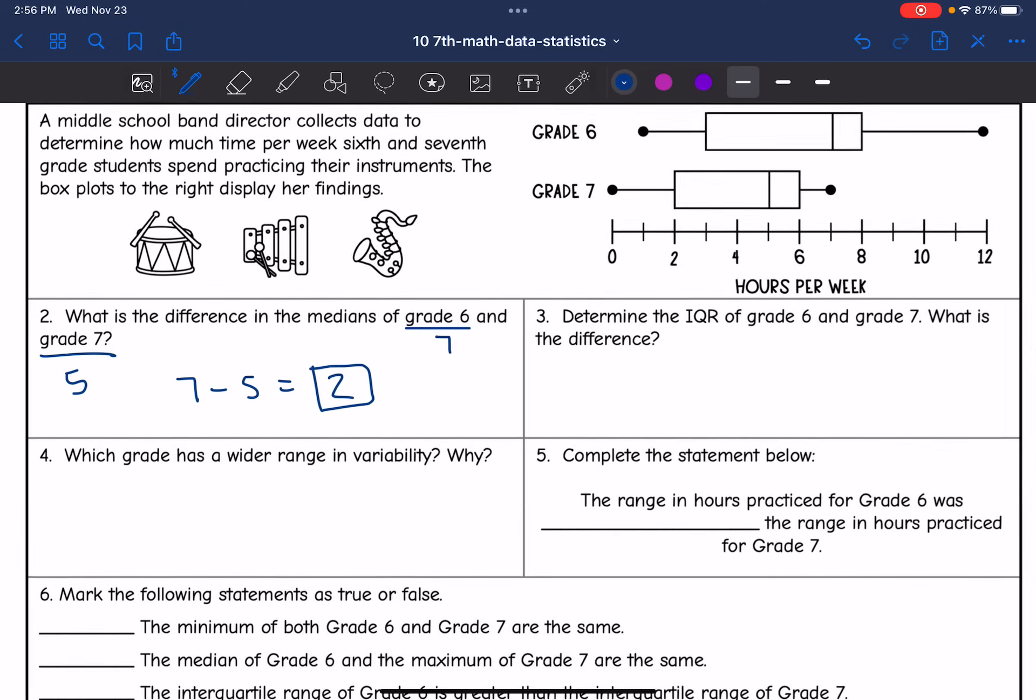Then three says, determine the IQR of grade six and seven. What is the difference? So for grade six, their IQR would be eight minus three, which is five.